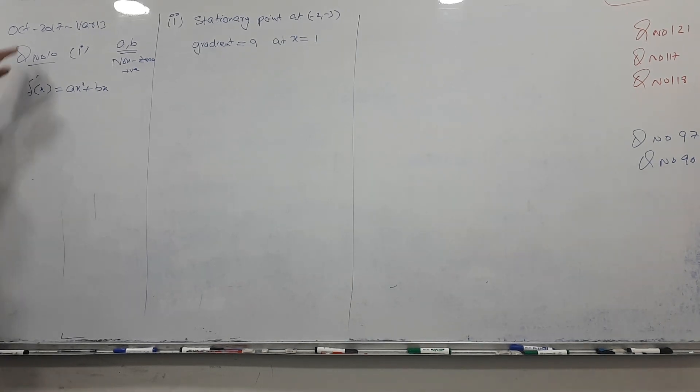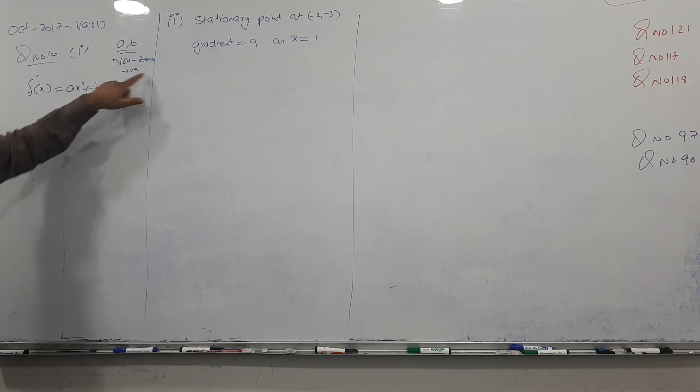Okay, question is October 17, we're in 13, question number 10 we have. We have given a derivative, this dash stands for first derivative, and a, b are non-zero, non-zero positive constants given both.